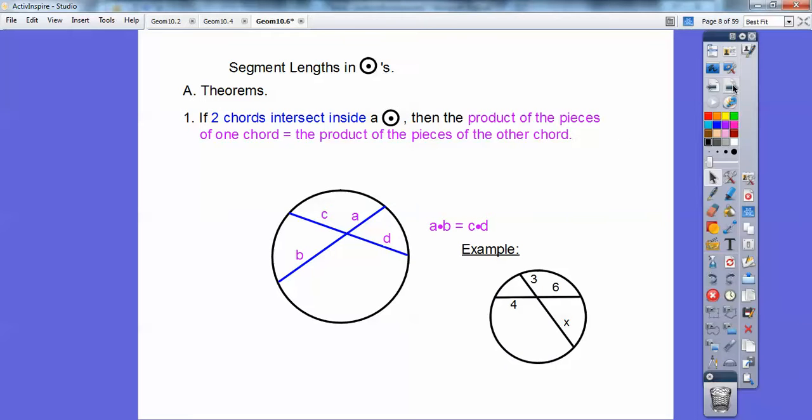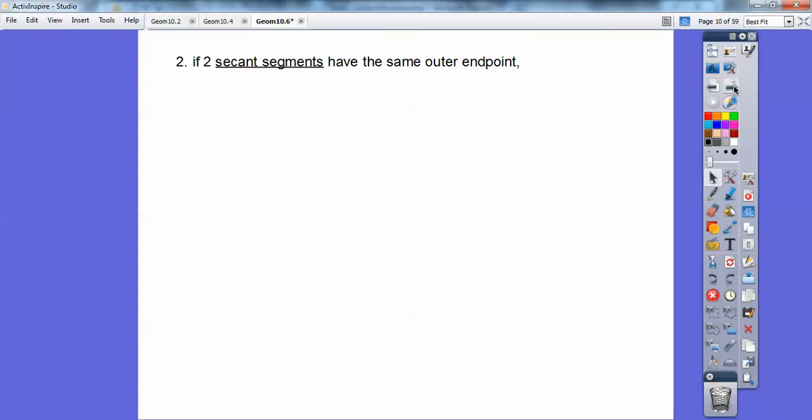And here's an example. So here I have this piece times this piece equals this piece times this piece. And when you multiply, 3 times X equals 4 times 6. And you get 3X equals 24, and 3 goes into 24 eight times.